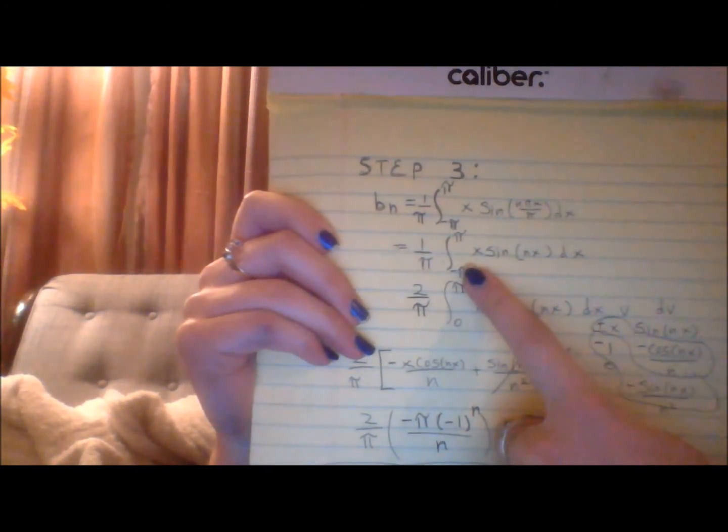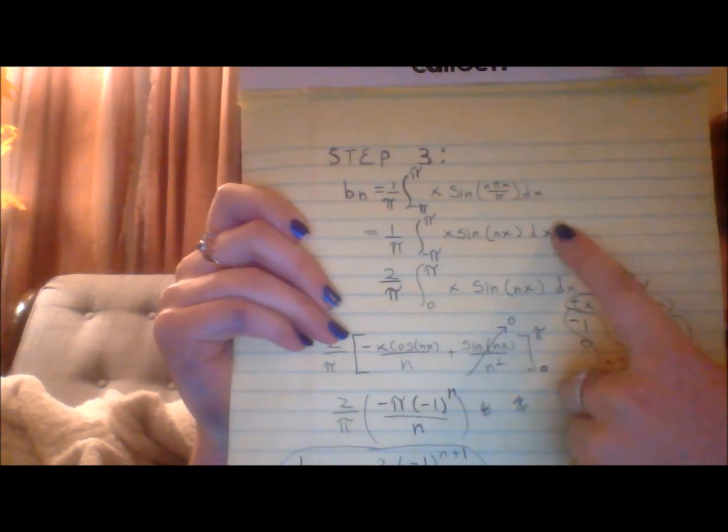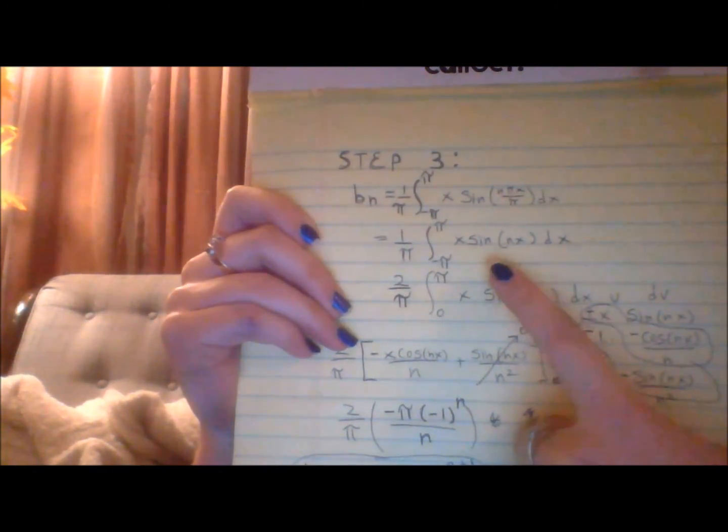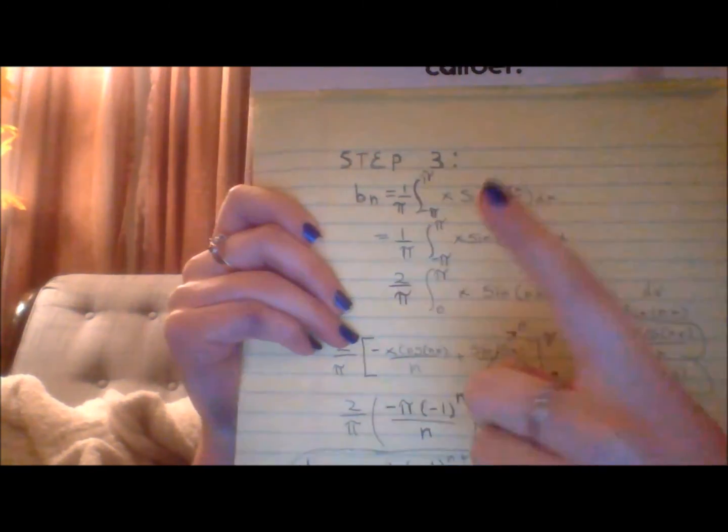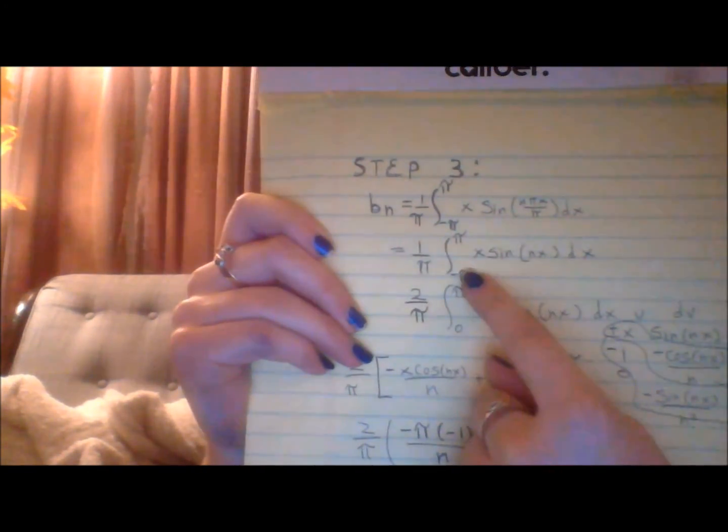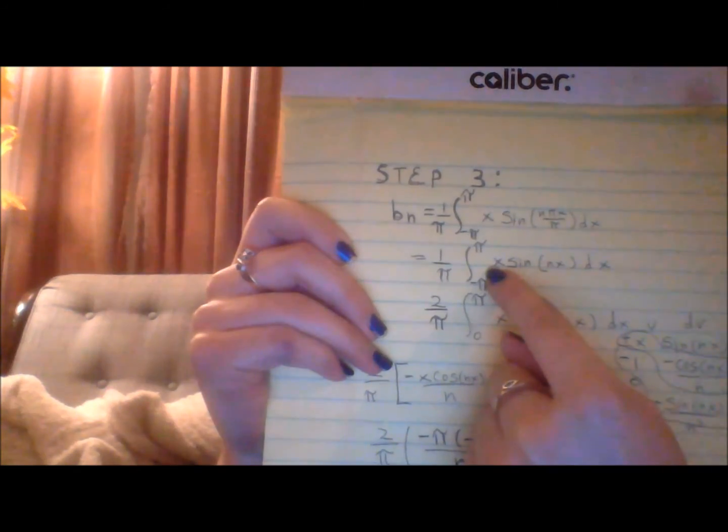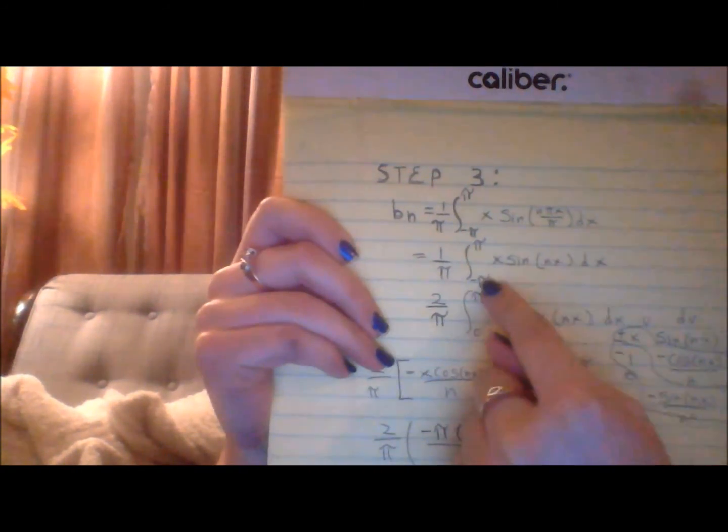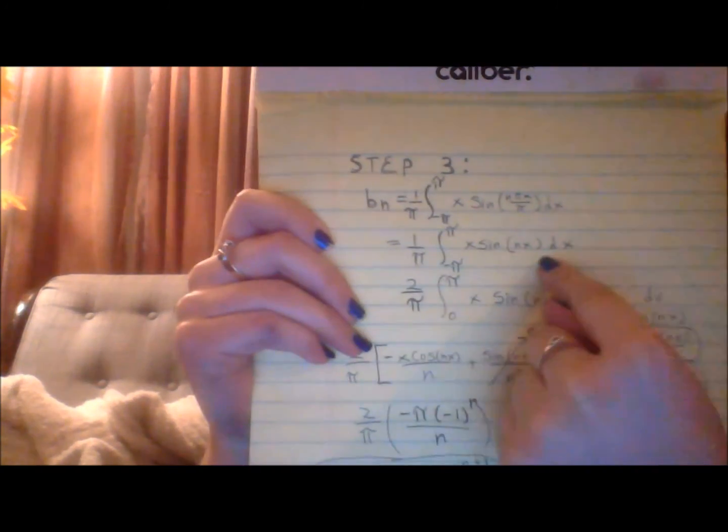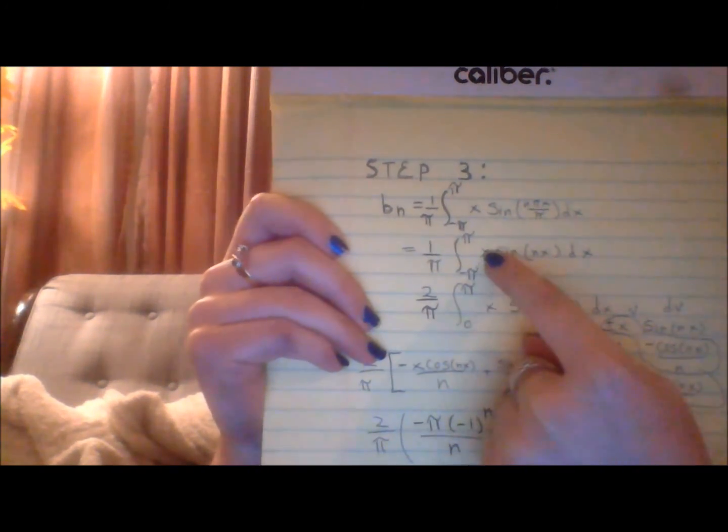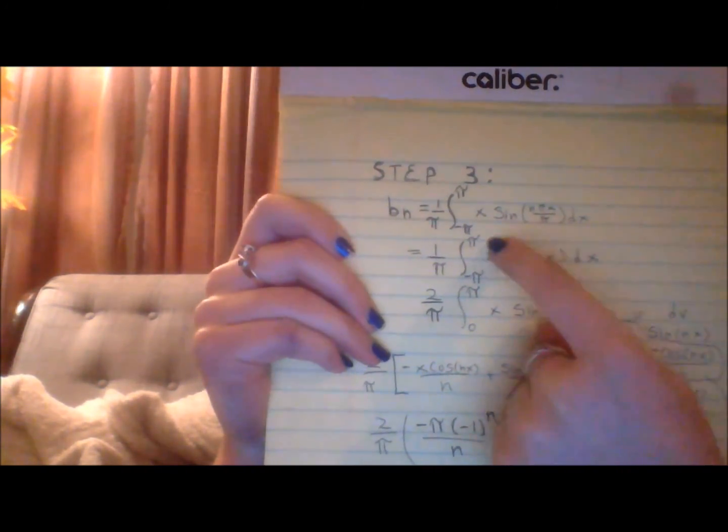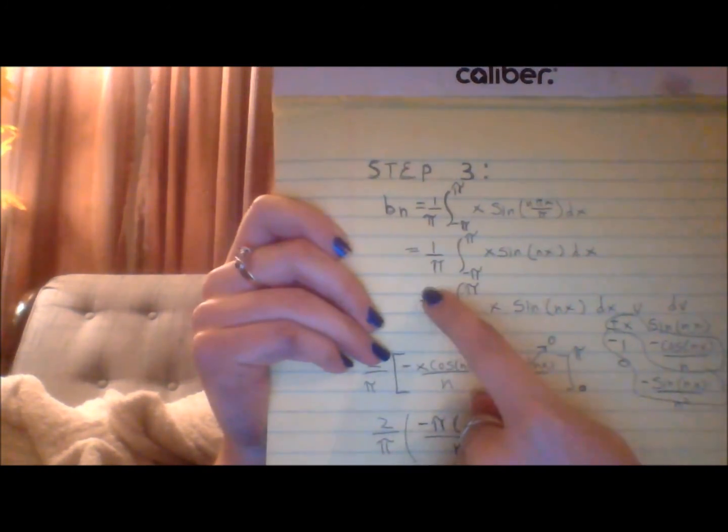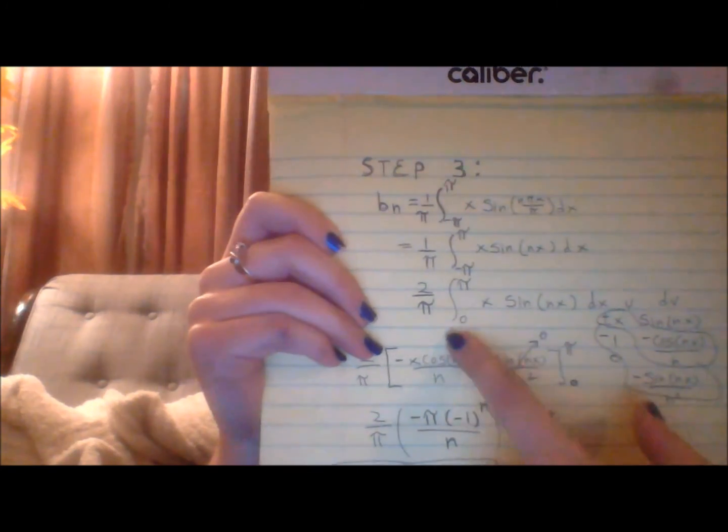And then if you look at this function, you will notice it is an odd function, sine of x times an odd function, which is the same as having an even function. Because if you plug in a negative input, you will always get a positive output, because x will always give you a negative output, and then sine will always give you a negative output. A negative times a negative will give you a positive, and because it's even, you can change your interval from negative pi to pi to just 0 to pi with putting a 2 on the outside.